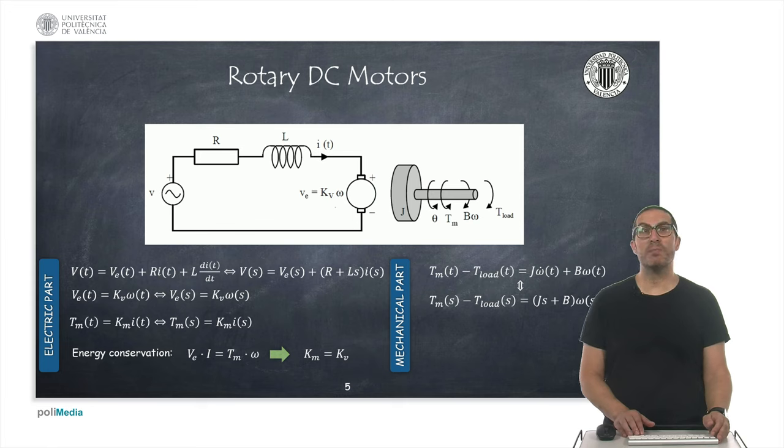The mathematical expressions that I indicate here are commonly used to model the dynamic behavior of a DC motor. If there are no energy losses, Km and Kv are equal in this case.